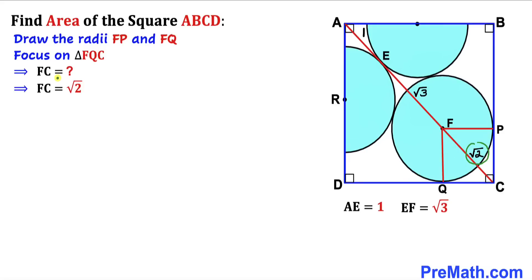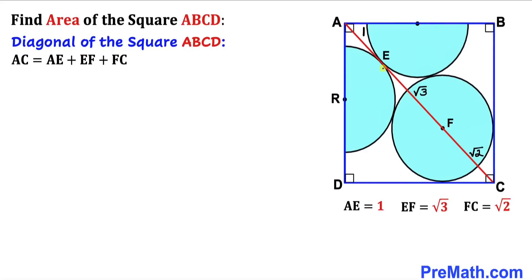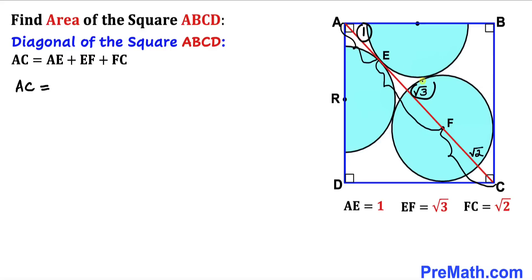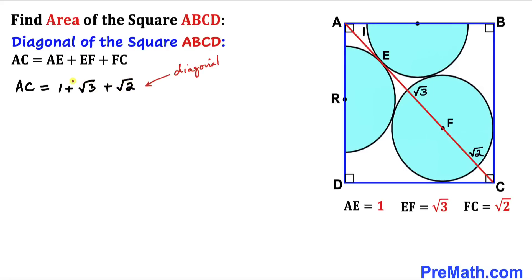The full diagonal AC of square ABCD equals the sum of the individual lengths: AC = AE + EF + FC = 1 + √3 + √2. This is the total diagonal length of the square.